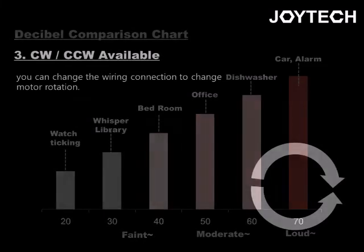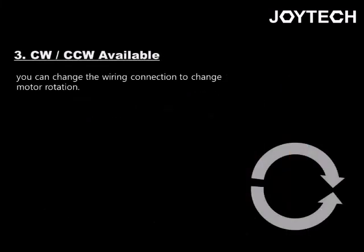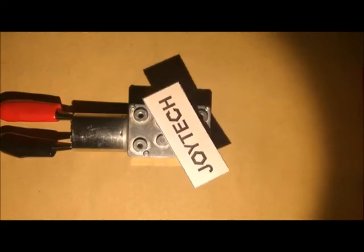The last feature of this motor is that you can change the wiring connection to change motor rotation. This is a basic function of worm gear DC motor.